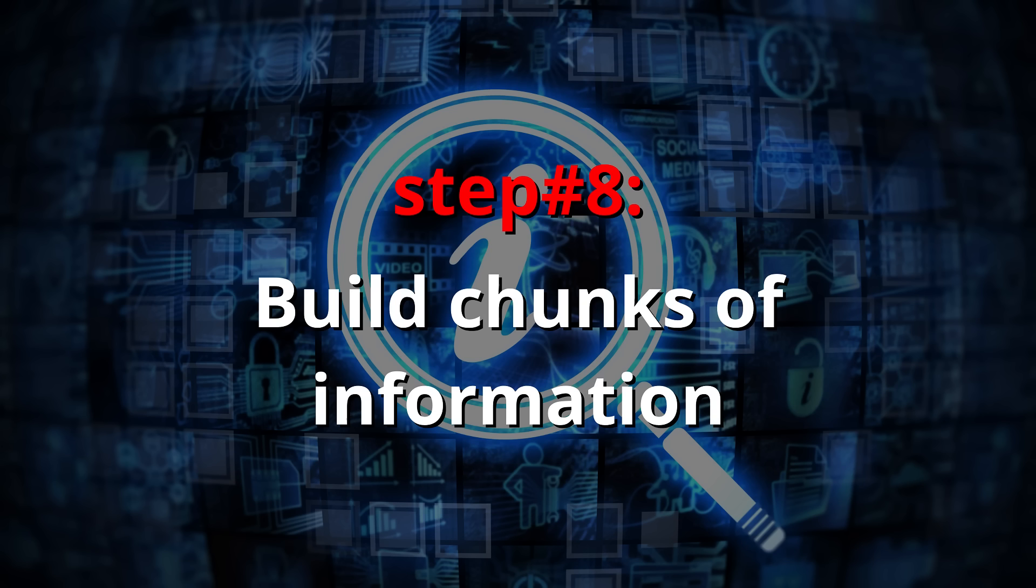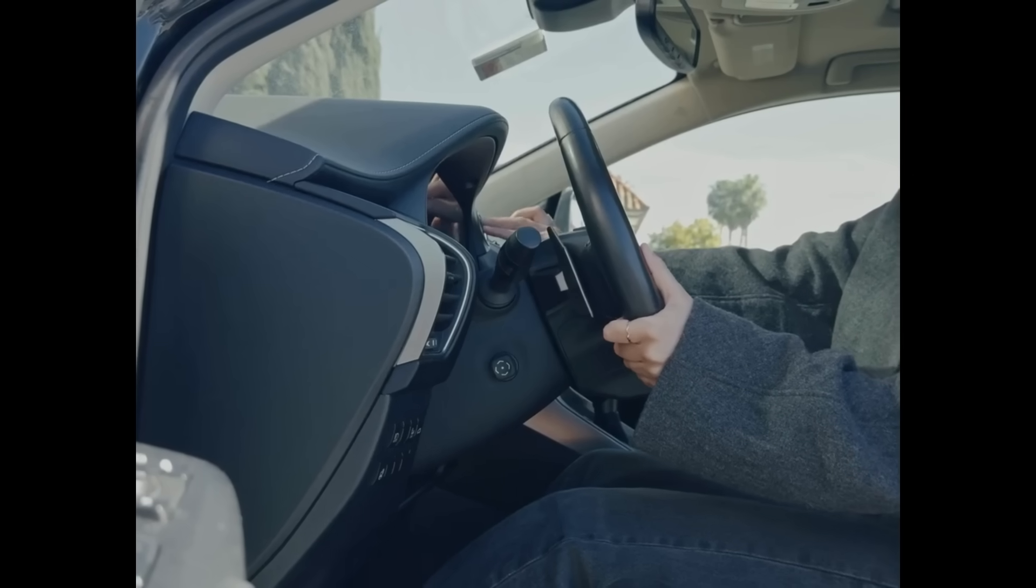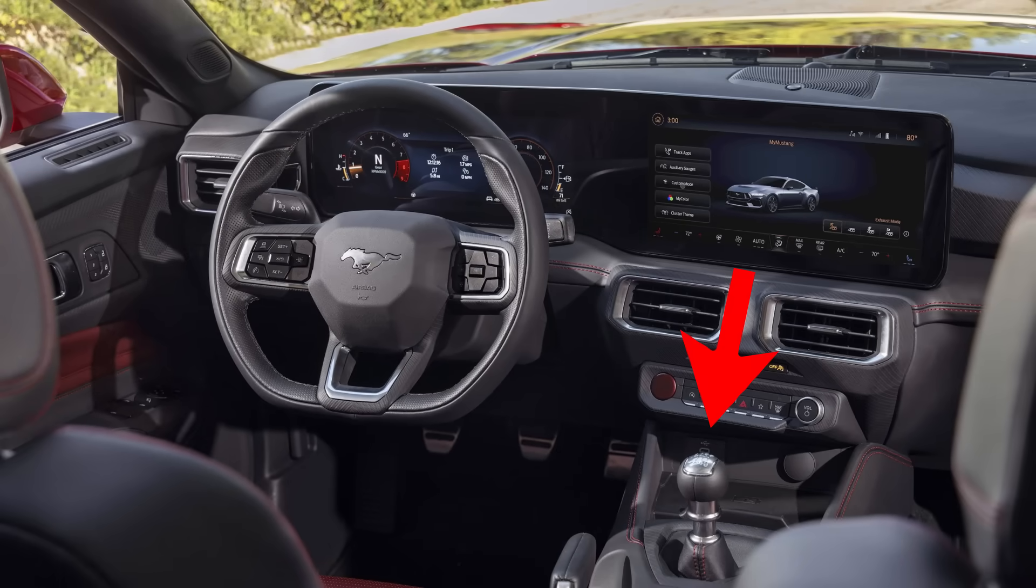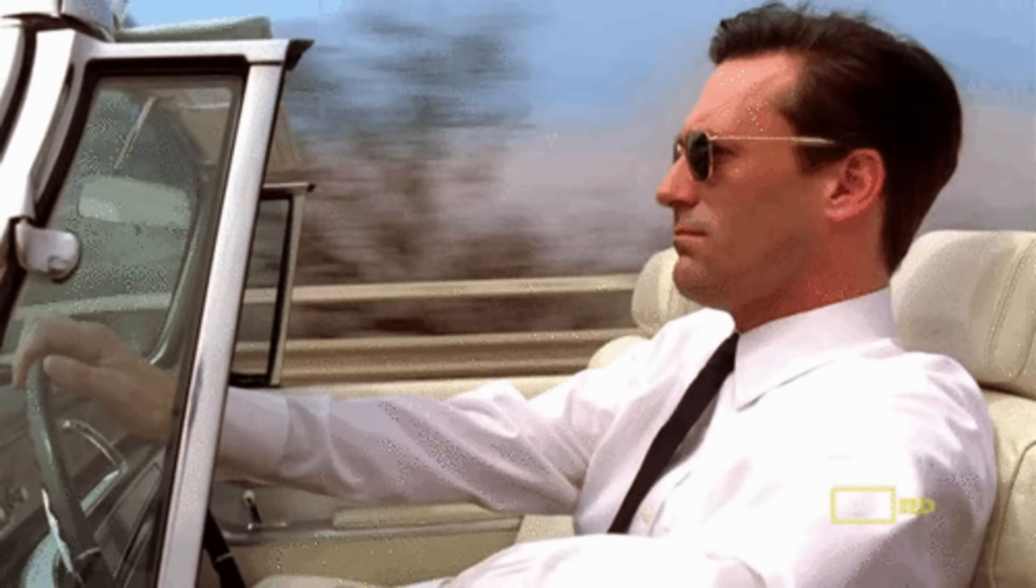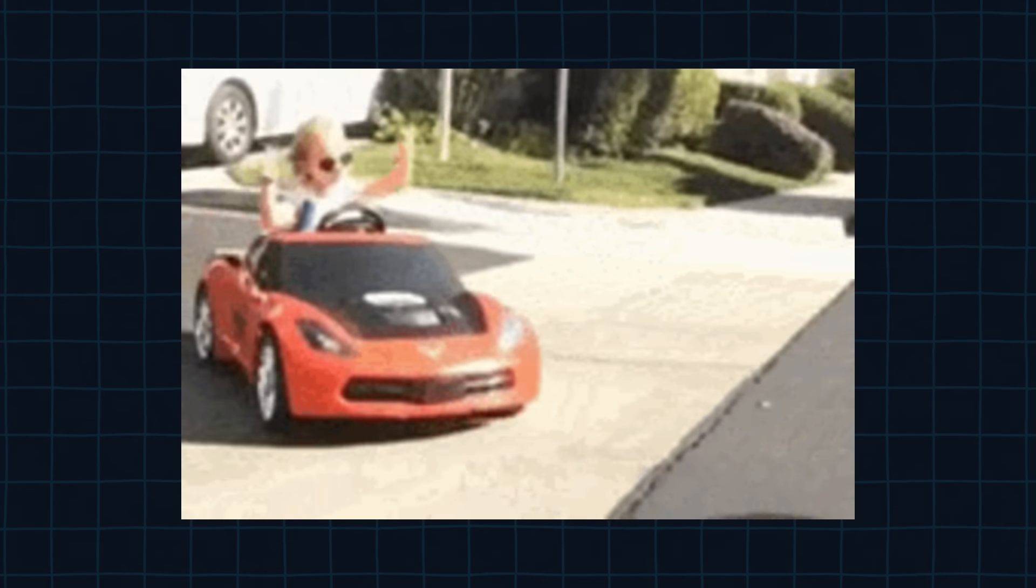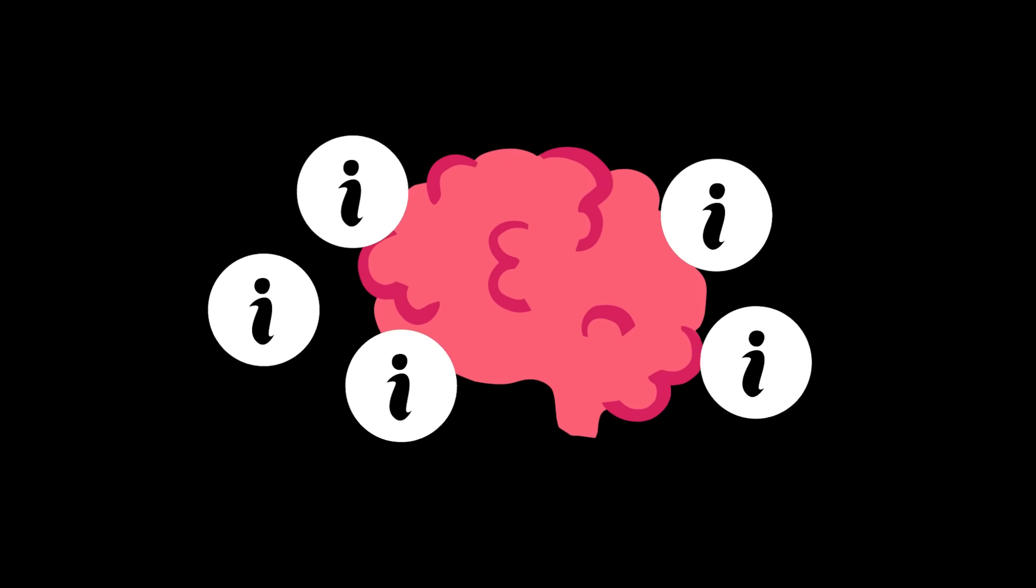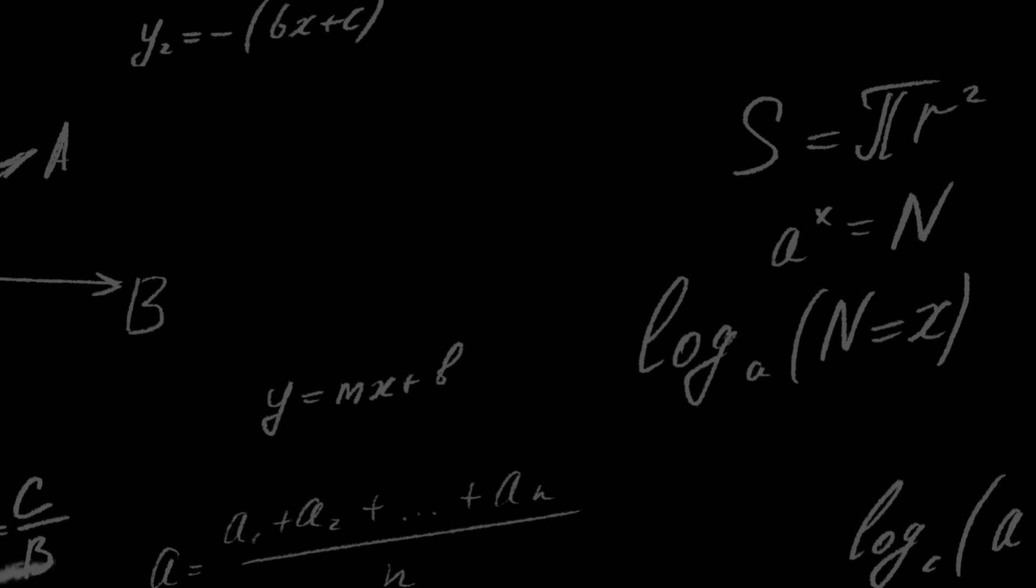Step number eight, build chunks of information. Imagine learning to drive. At first you have to focus on every little move, clutch, shift, accelerator, mirrors. But after a few months of practice, you drive almost on autopilot. That's what a chunk is. A group of related pieces of information that your brain stores and recalls as a single unit, rather than as separate elements.